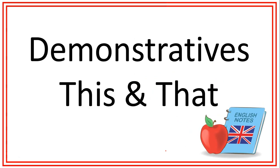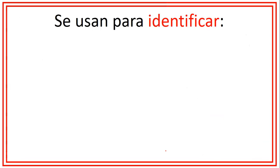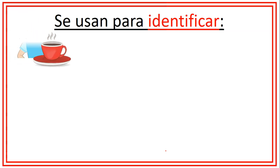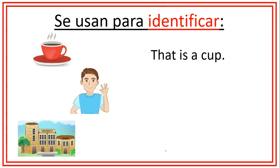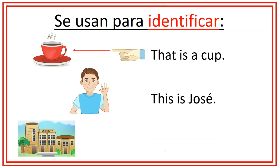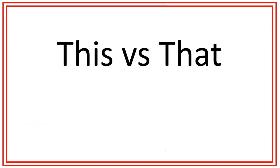Bienvenidos nuevamente a English Notes by EJ. Hoy vamos a checar la lección número 5, Demonstratives this and that. Los demostrativos this and that se usan para identificar objetos, personas o lugares. Por ejemplo, that is a cup — esa es una taza. This is José — él es José. O that is a university — esa es una universidad. Ahora vamos a ver las diferencias entre this and that.